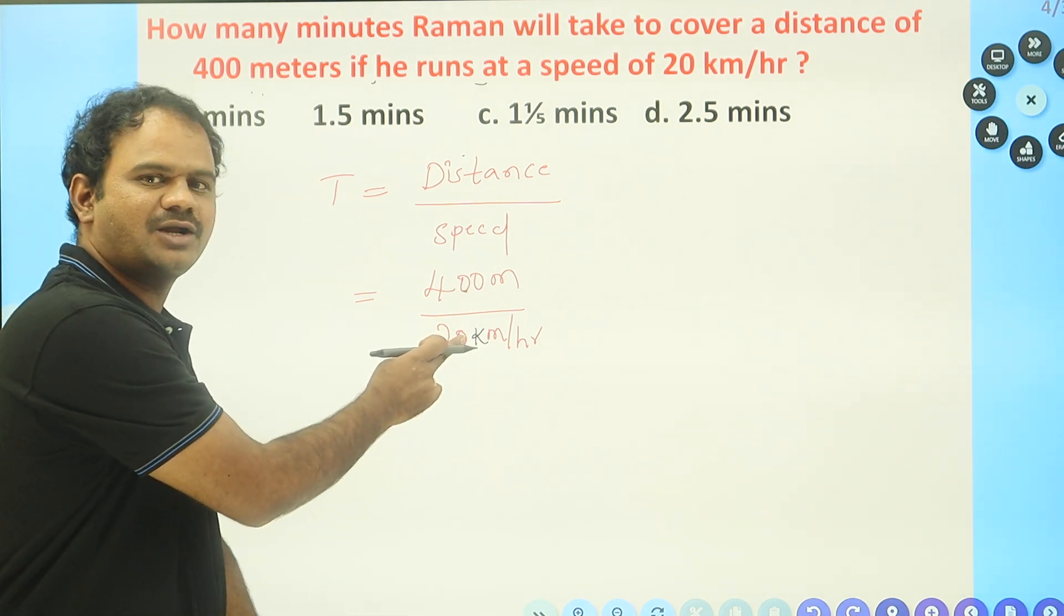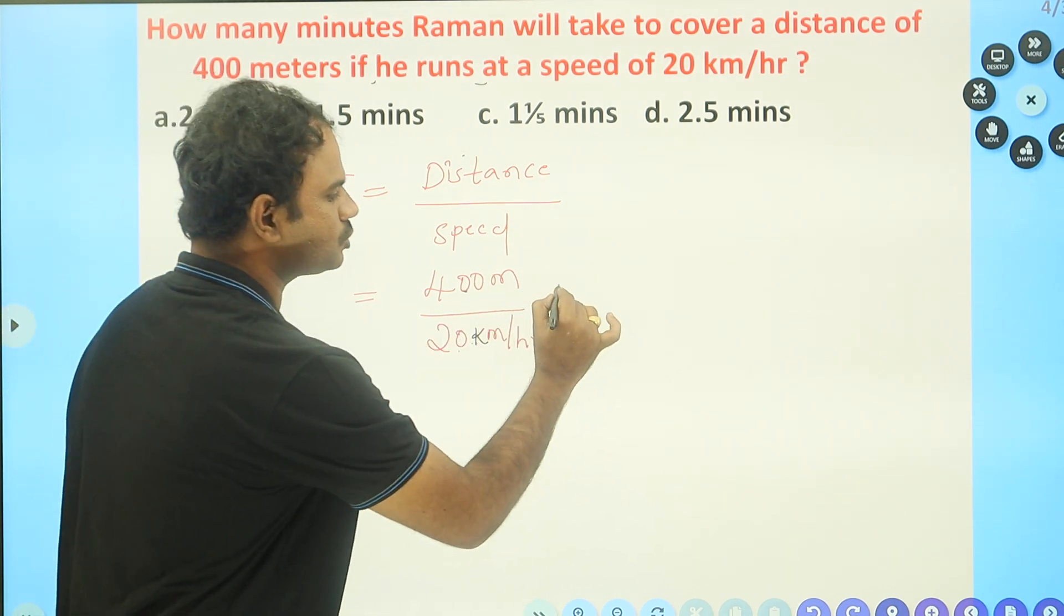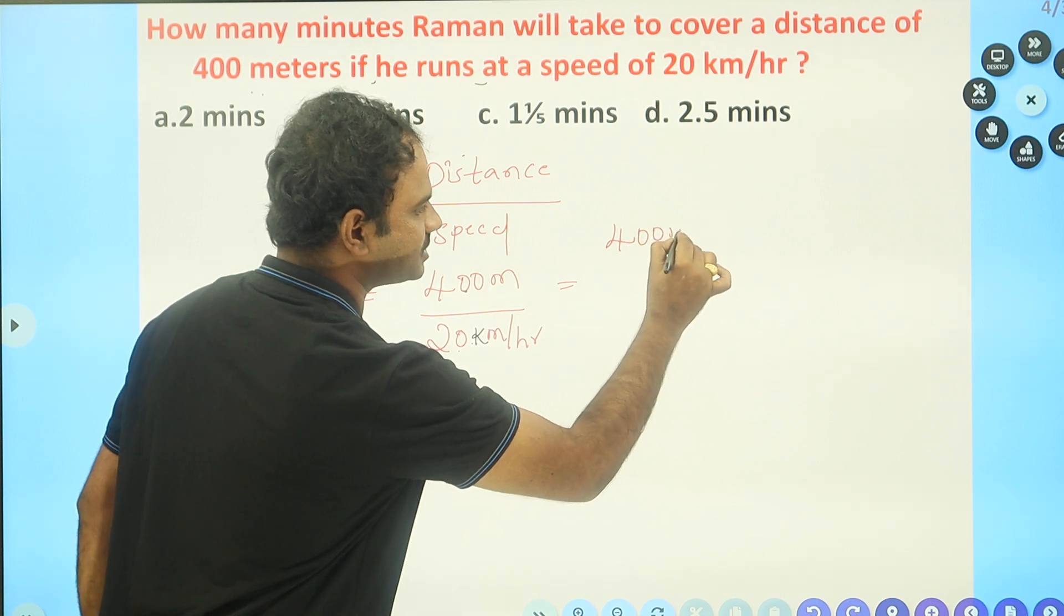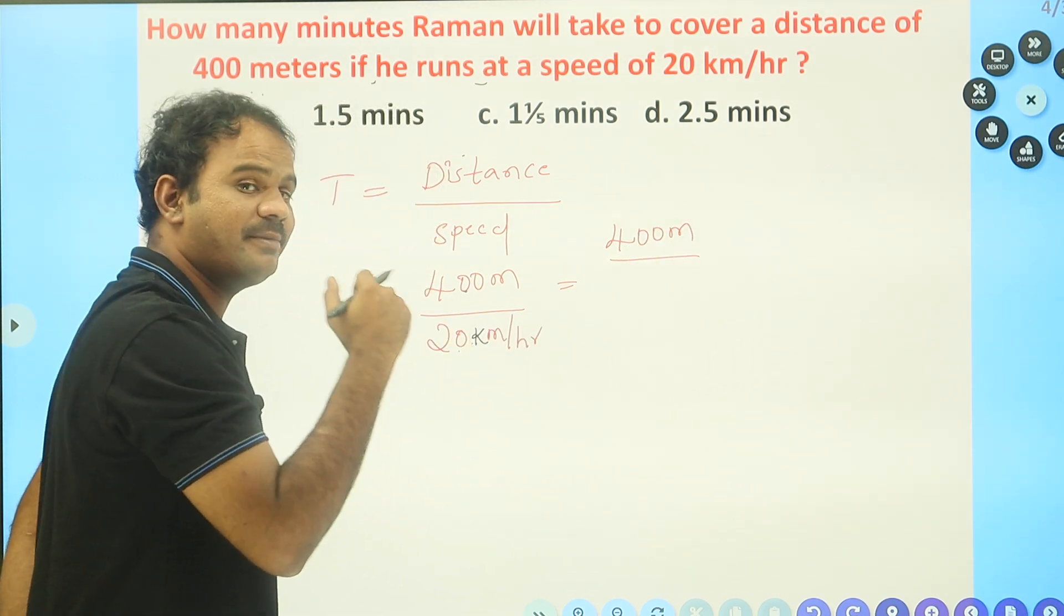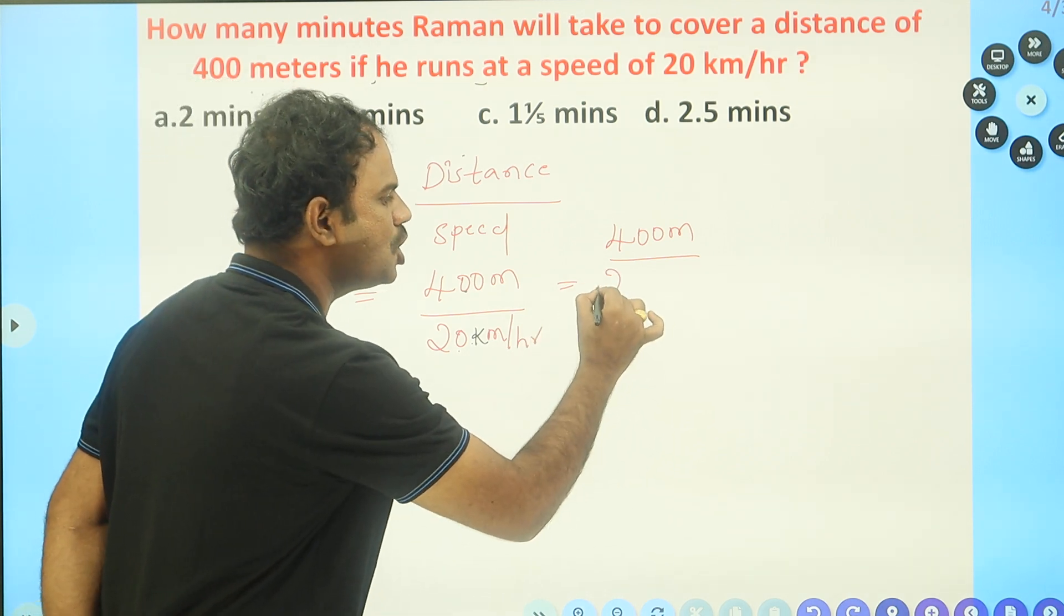Now I am converting kilometers per hour into meters per second. That is equal to 400 meters divided by... to convert kilometers per hour to meters per second, we have to multiply by 5/18.